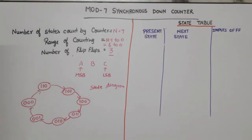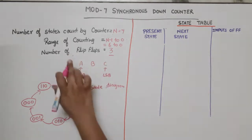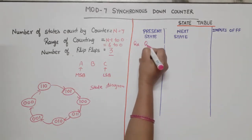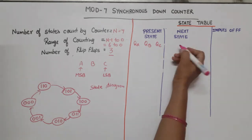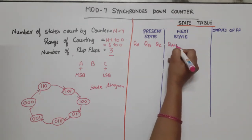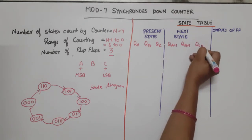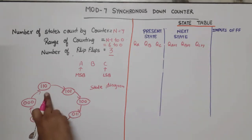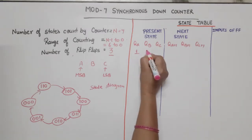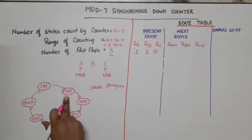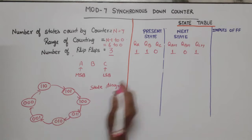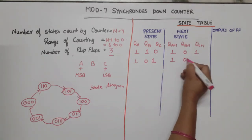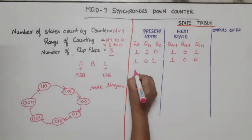Now we construct the state table. The present state columns are A, B, C — that is QA, QB, and QC. The next state columns are QA+1, QB+1, and QC+1. First I will list the present states and next states, then we will check the inputs. The first state is 6 (binary 1-1-0), and the next state is 5 (binary 1-0-1). Present state 5 (1-0-1), next state is 4 (1-0-0).